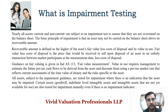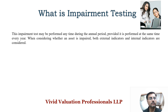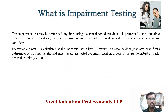All assets subject to impairment guidance are tested when there is an indication that the asset may be impaired. Certain assets — including goodwill — are also tested annually even if there is no impairment indicator. This impairment test may be performed at any time during the annual period, provided it is performed at the same time every year. Usually we consider 31st March every year. When considering whether an asset is impaired, we consider both external and internal indicators.